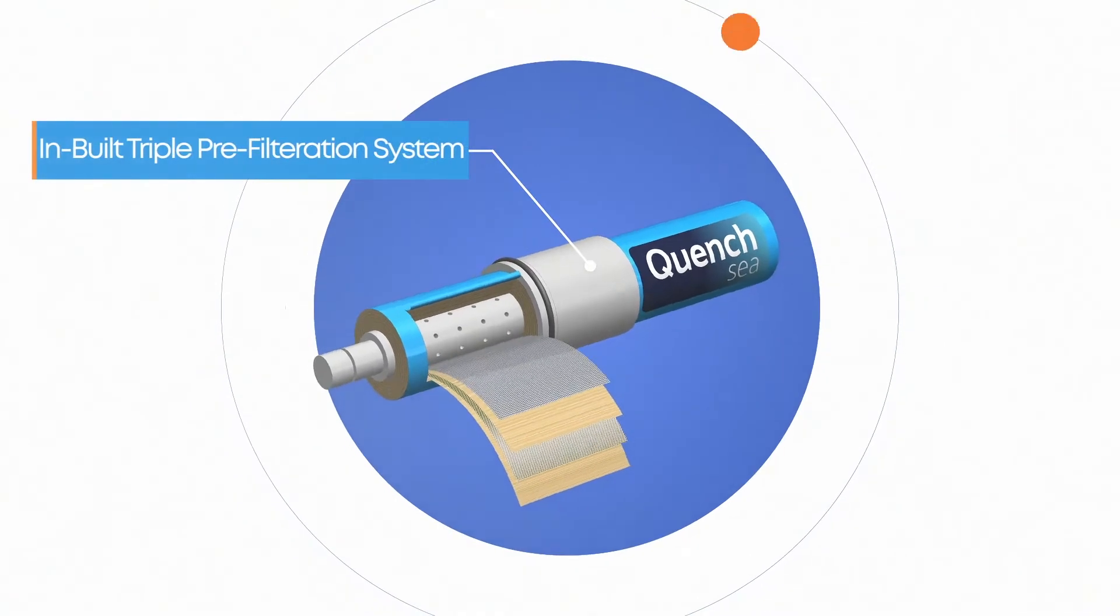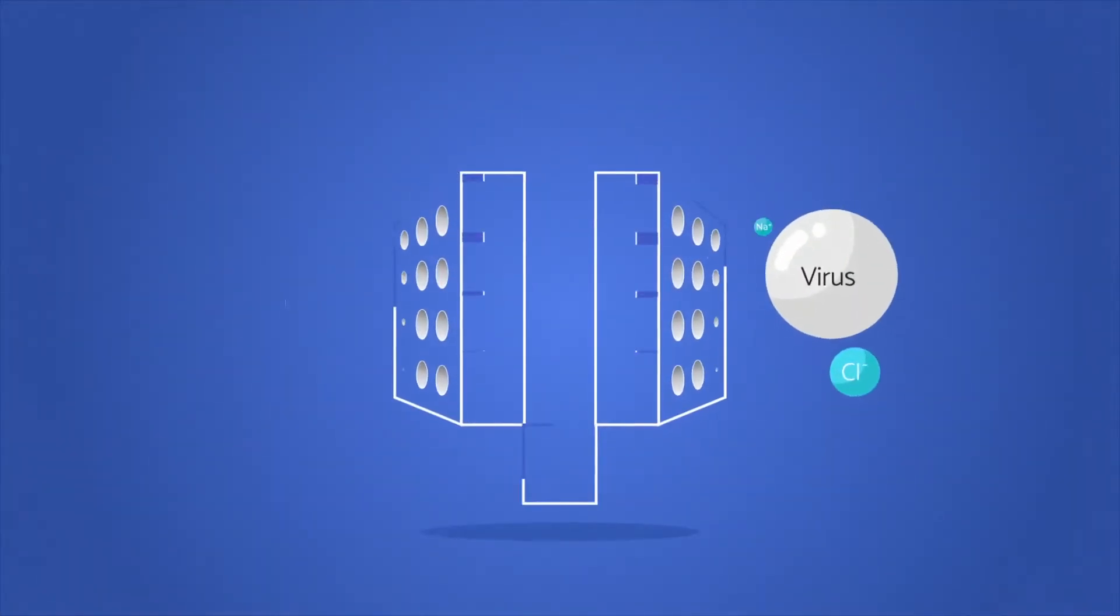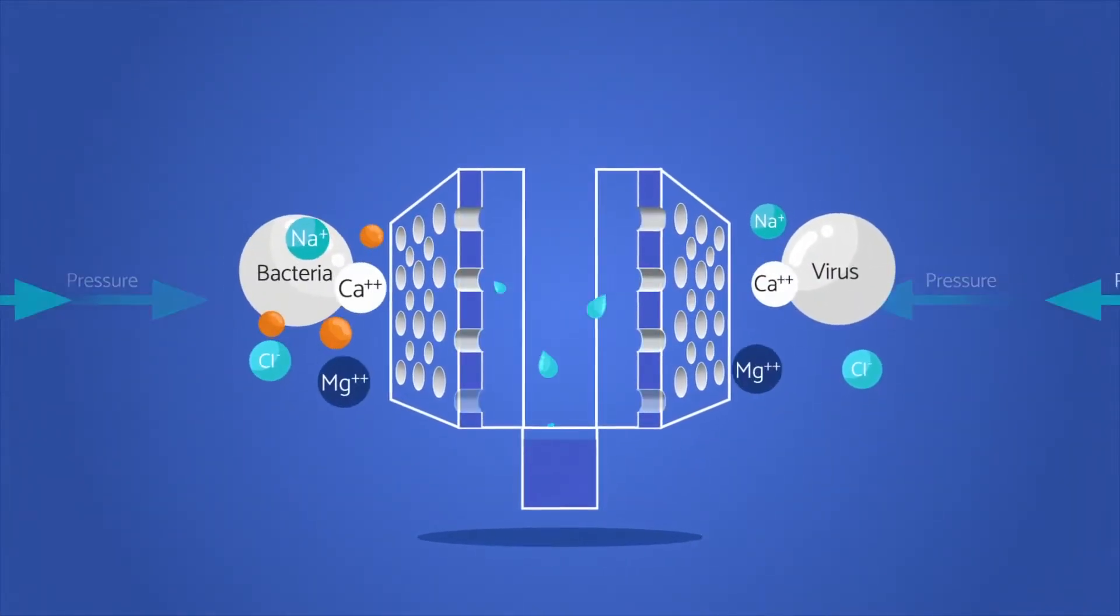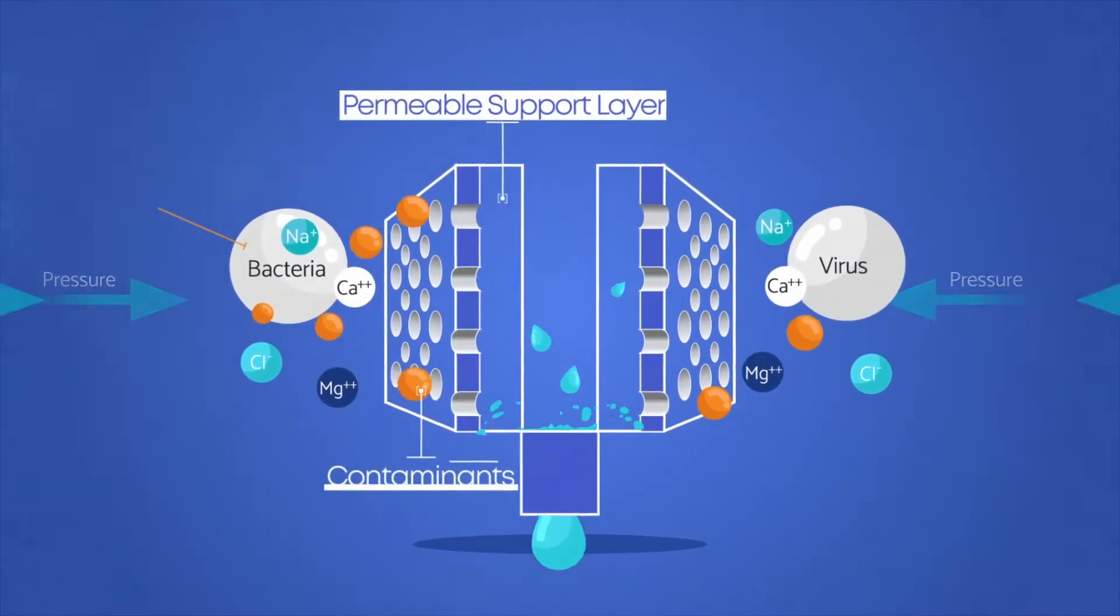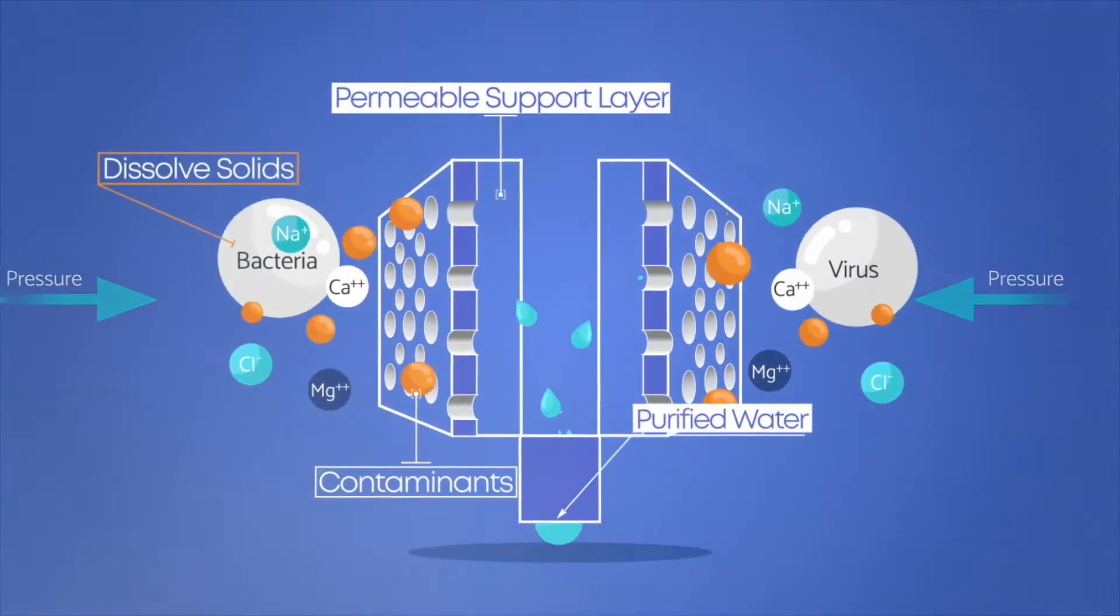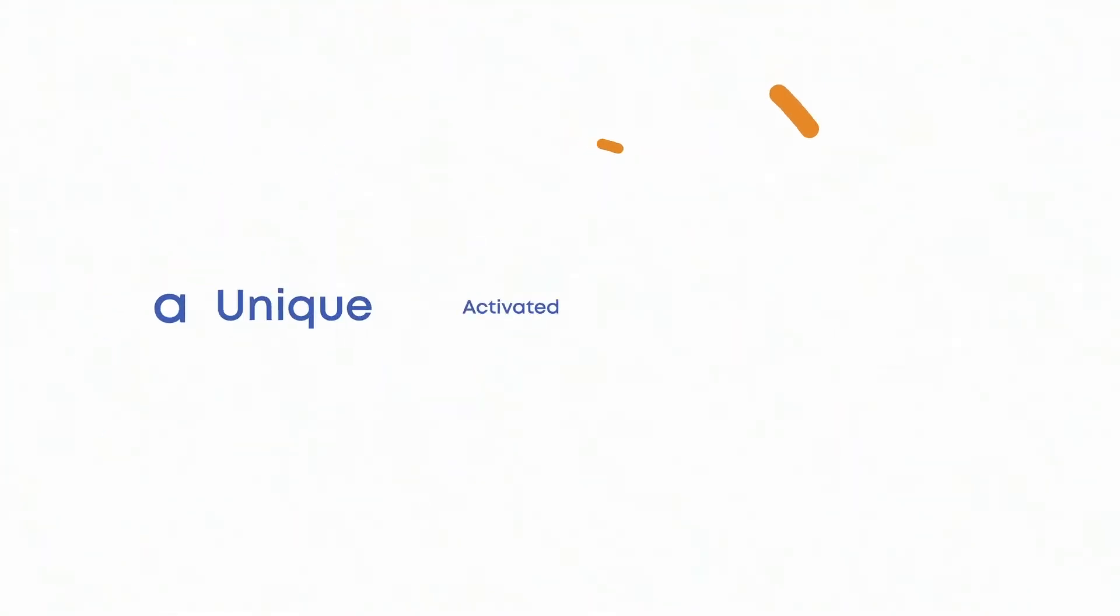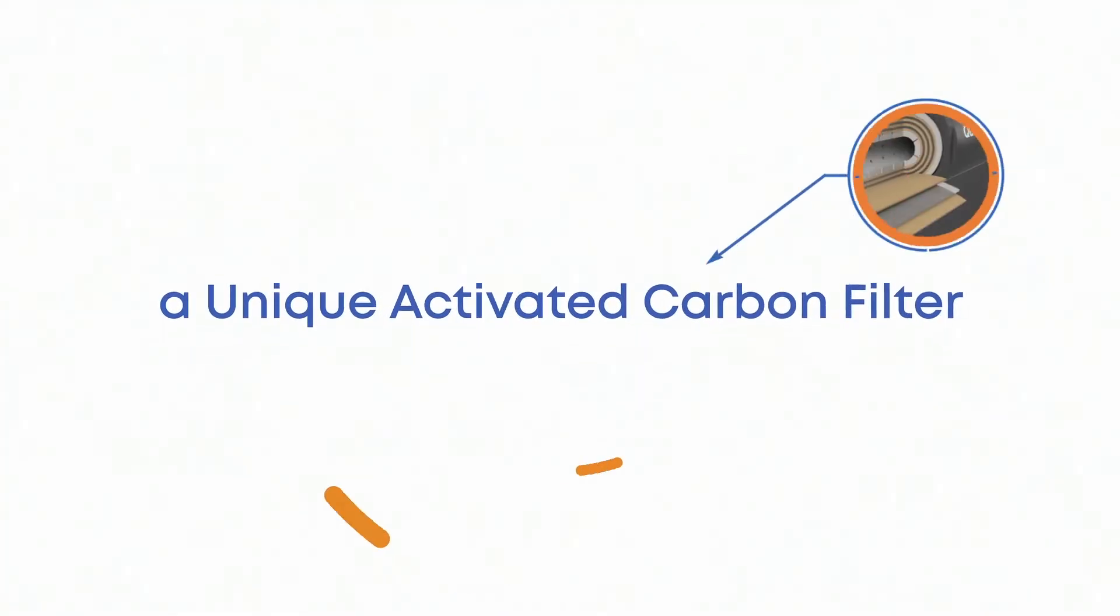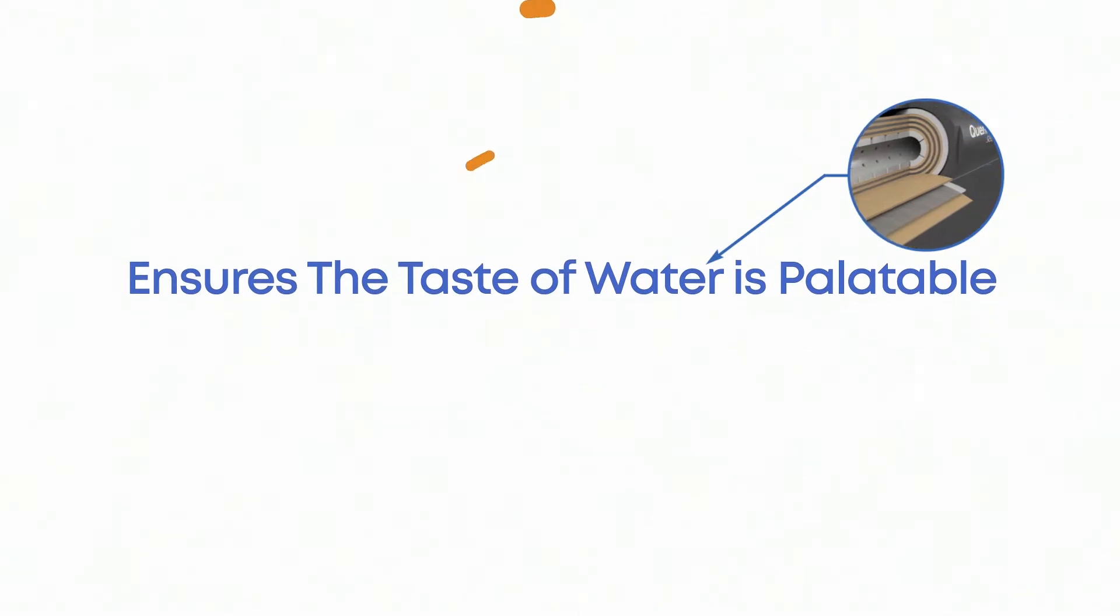QuenchSea has an inbuilt triple pre-filtration system. Micro filters and an ultra filtration cartridge remove suspended particles as small as 0.01 microns, including bacteria, viruses, and microplastics. A unique activated carbon filter ensures the taste of water is palatable.